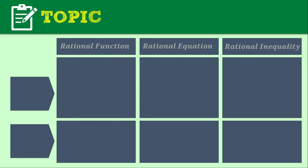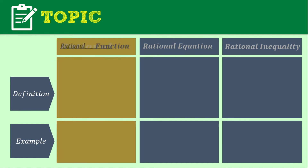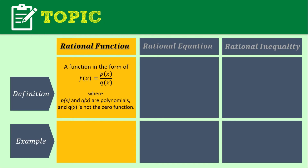Let's look at this table comparing the three important terms for this lesson: rational function, rational equation, and rational inequality. Starting with rational function — when you say rational function, it's a function in the form of f(x) = p(x) / q(x), where p(x) and q(x) are polynomials and q(x) is not the zero function. Take note that q(x) must not equal zero, or else it will make this undefined.